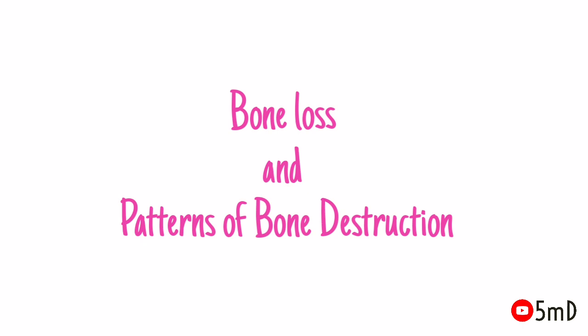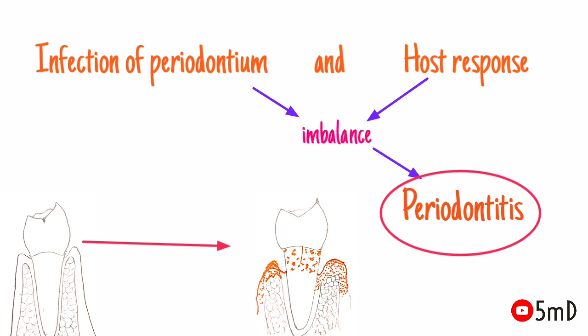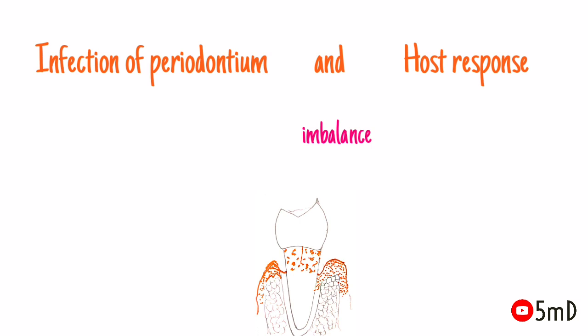Today let us see about bone loss and patterns of bone destruction in periodontitis. It is a really wide topic, but we have tried to condense the important facts here. Infection of periodontium and imbalance in the host response leads to the destruction of periodontium, which is the attachment apparatus of the tooth.